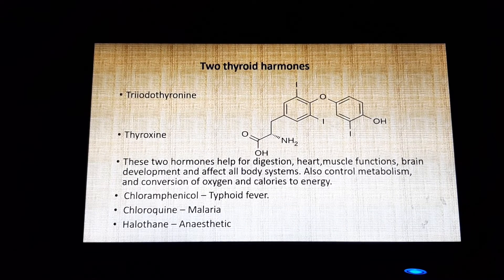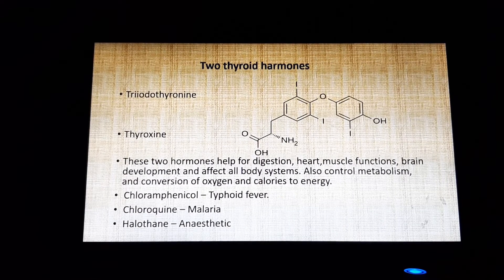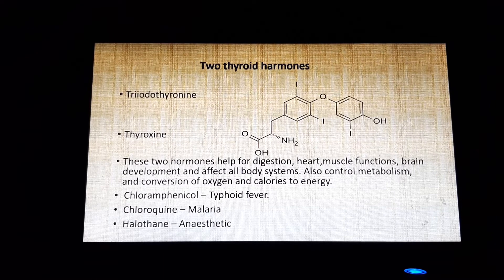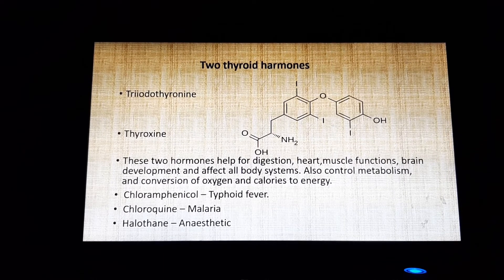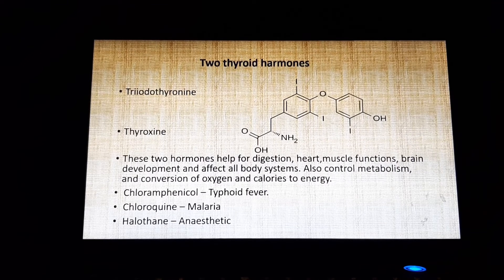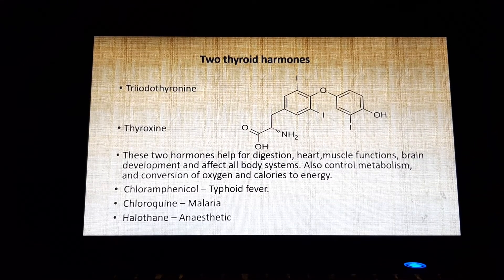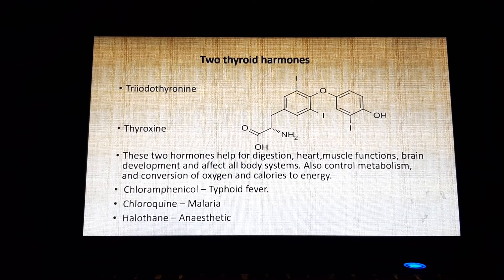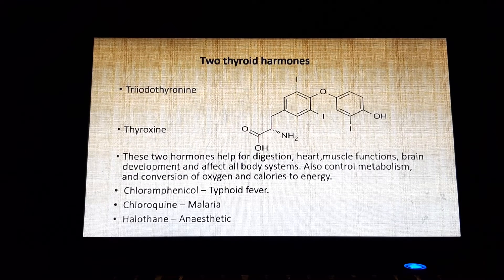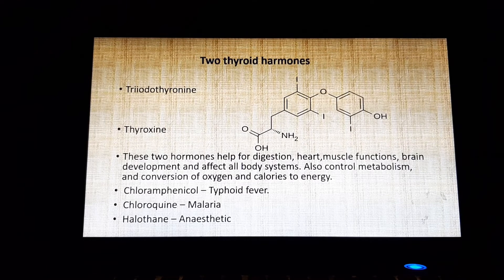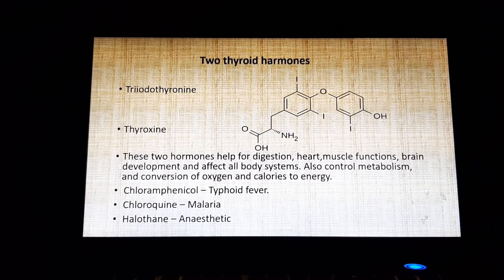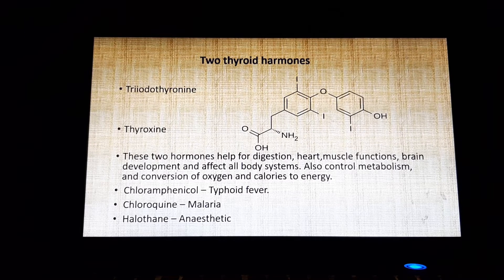Many halogen compounds are of industrial use; they are used as solvents and they occur naturally. The thyroid hormones — triiodothyronine and thyroxine — help with digestion, heart functioning, muscle functions, brain development, and affect all body systems. They also control metabolism and the conversion of oxygen and calories to energy.